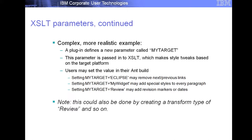XSL parameters — a more realistic example: you might define a new parameter called 'myTarget' that specifies exactly what type of HTML you're going to, if you're producing XHTML for several different rendering platforms. That parameter could then be passed into your build, set on the command line or in your script, and then use some XSLT to pick it up and do things based on that parameter. For example, if you're going to Eclipse, you might remove next/previous links because the framework will provide them. There are multiple approaches you can take to get the same result.